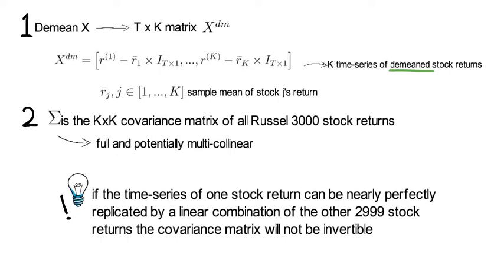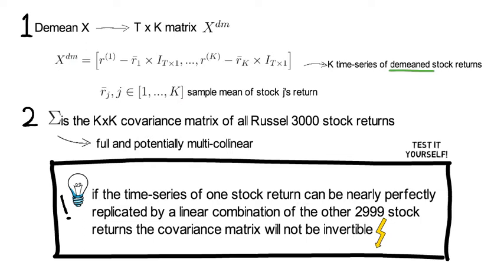Remember, if the time series of one stock return can be nearly replicated by, or ideally perfectly replicated by, a linear combination of the other 2,999 stock returns, then you face a problem because the covariance matrix will not be invertible because the rank of the matrix will be less than 3000. I recommend you test that yourself.